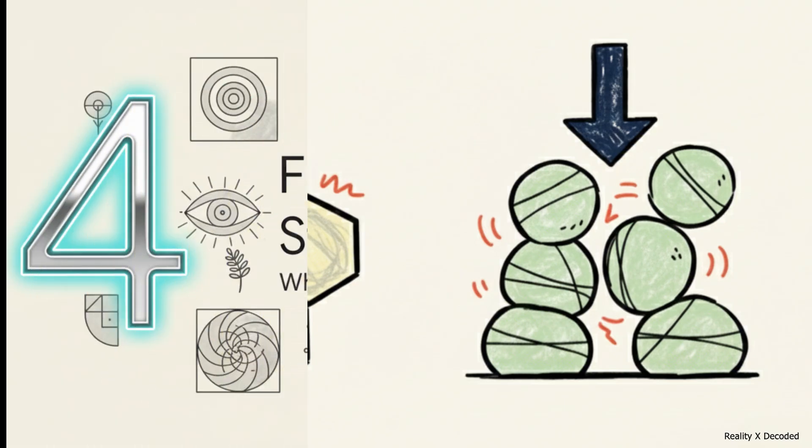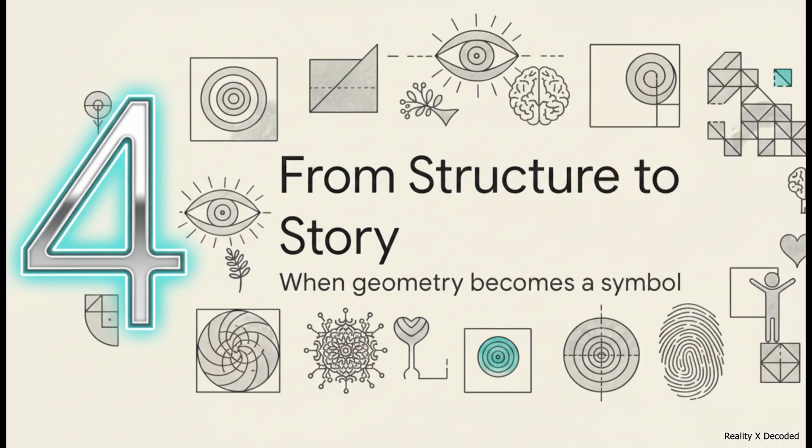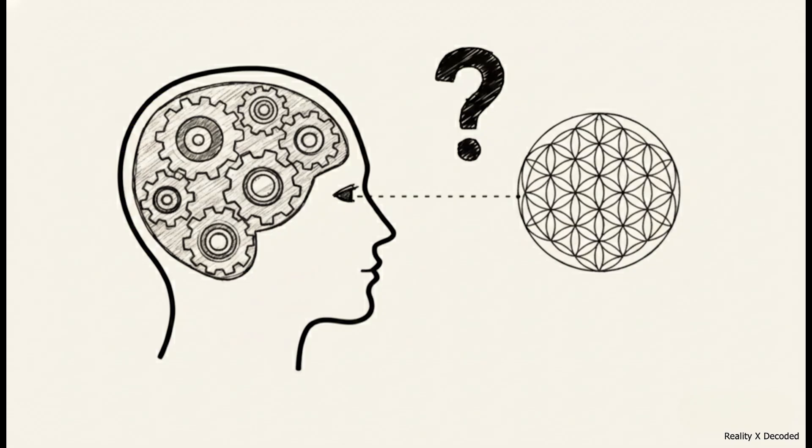So we've got this mathematical pattern that shows up in human art and in nature. So where did all the meaning, the sacredness, the mysticism, where did all of that come from? Well, this is where we humans finally enter the story. See, our brains are just wired for this stuff. We are relentless pattern-seeking machines. When we see something with perfect symmetry and balance and repetition, we don't just see a shape. Our brains instinctively go, whoa, what does this mean? We just can't help ourselves. We have to look for a deeper significance.